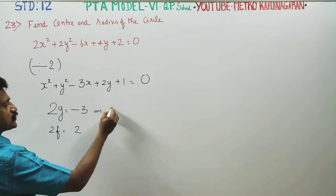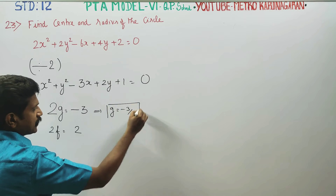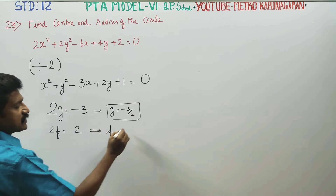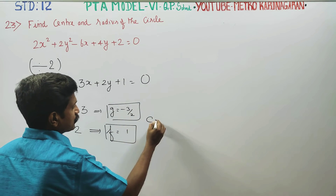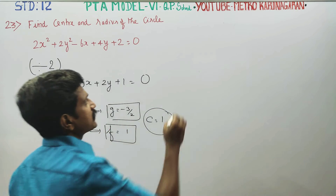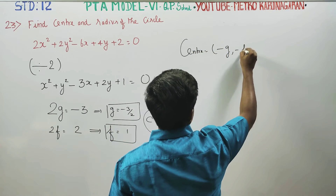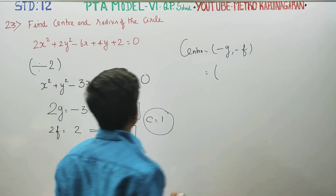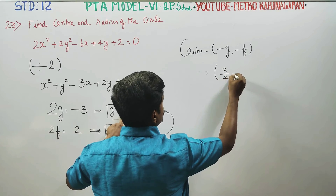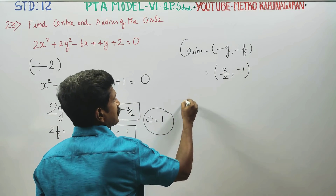Now, you will have to write the center. The center formula is (minus g, minus f). So the center is: minus g gives plus 3 by 2, and minus f gives minus 1. This is the center.